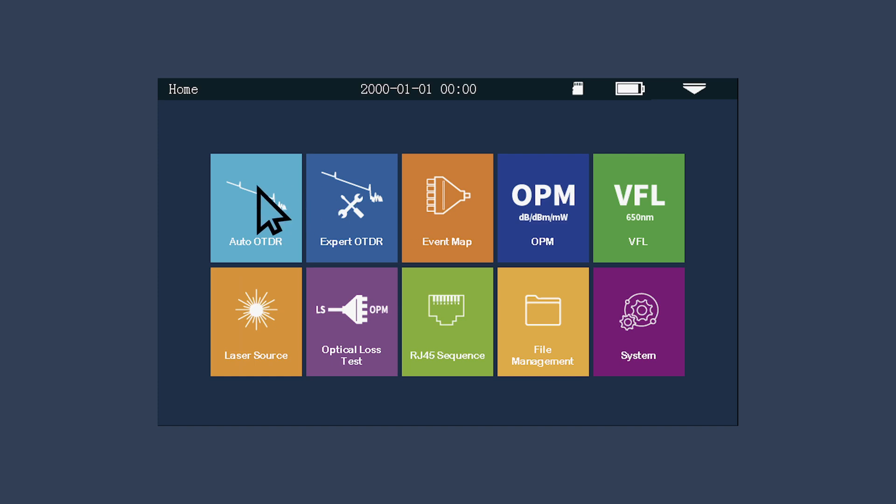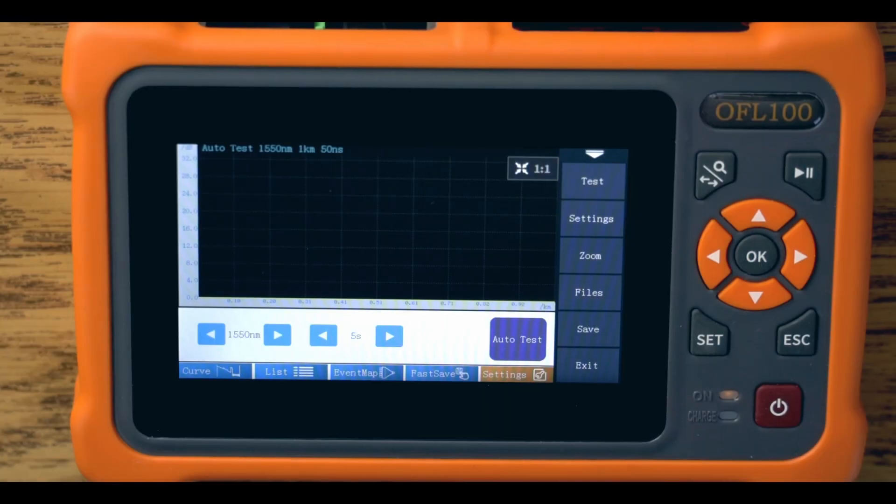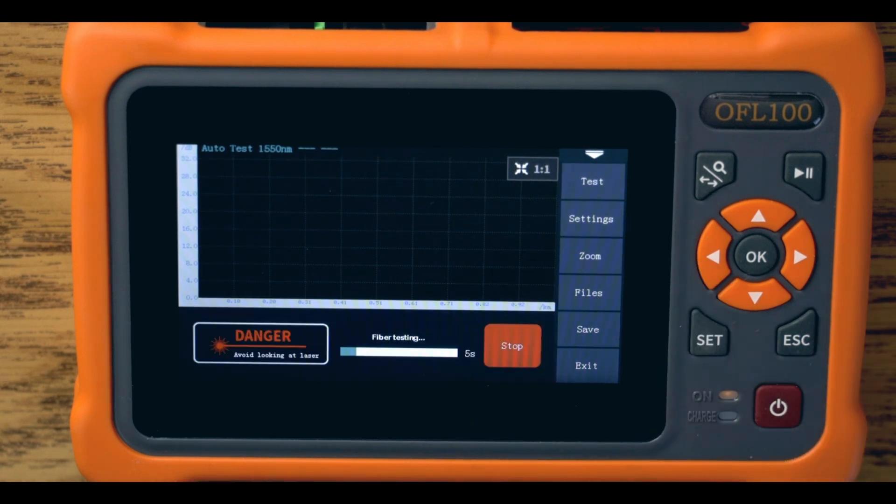Turn the OFL100 on and select the Auto OTDR mode. Push the Auto Test button. The OFL100 will complete a measurement in 5 seconds. If you need a longer average time, adjustments can be made in the settings menu.